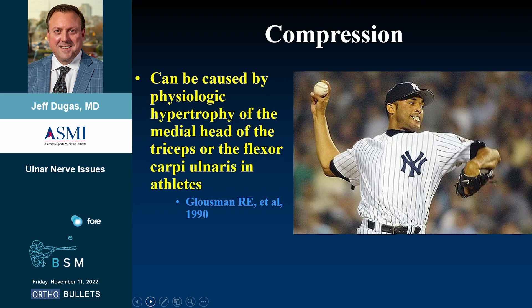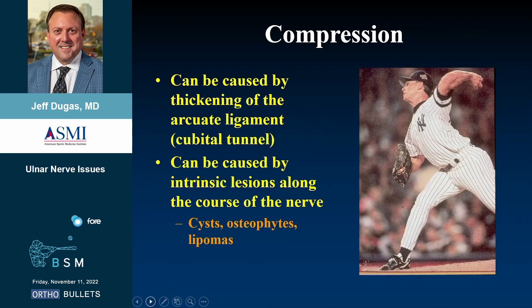Compression can be caused by physiologic hypertrophy of the medial head of the triceps or the flexor carpi ulnaris, by thickening of the arcuate ligament in the cubital tunnel, or by intrinsic lesions — cysts, osteophytes. You do see some intranural cysts and lipomas around the nerve that can cause compression and take up space.